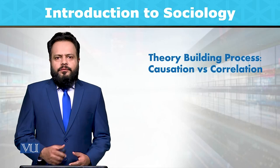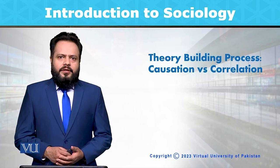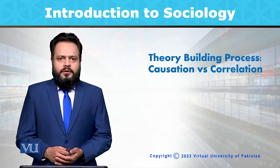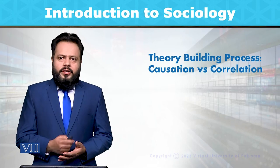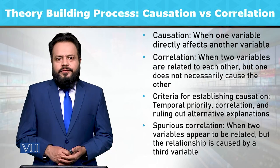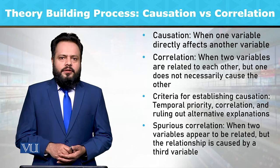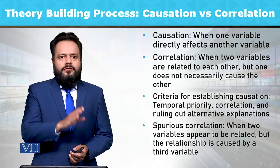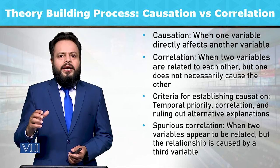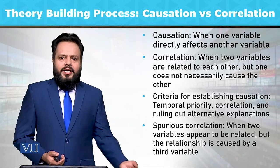Dear students, in this module we are going to talk about a very important aspect that often confuses us in the theory building process — which is the difference between correlation and causation. Causation is when one variable directly affects another variable. For example, variable A is directly leading to an effect that is produced as variable B. If A exists, then B exists.